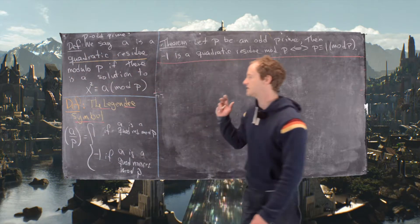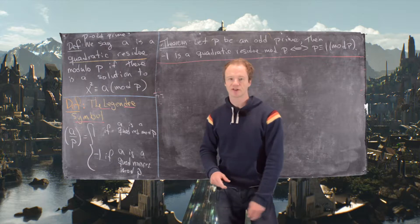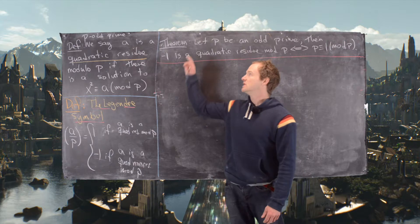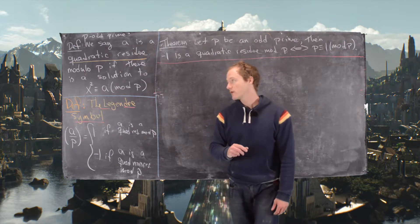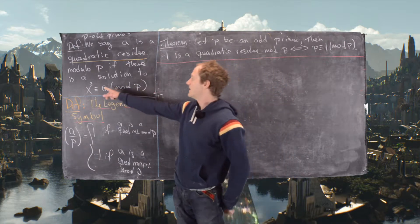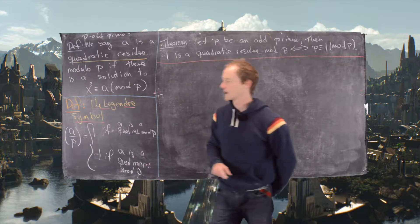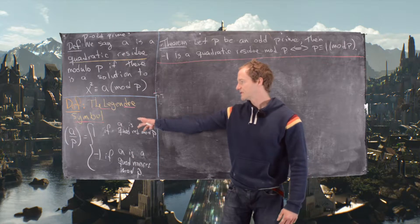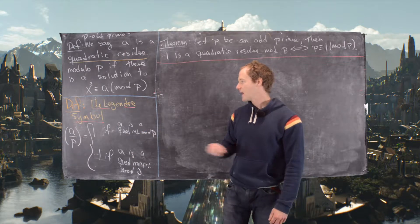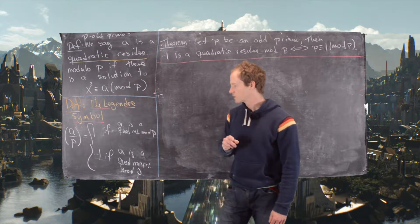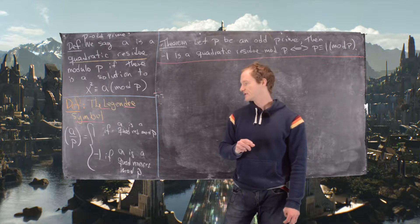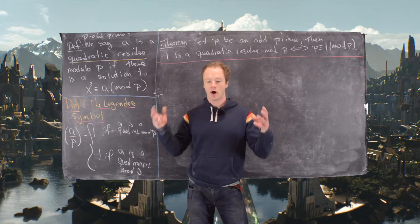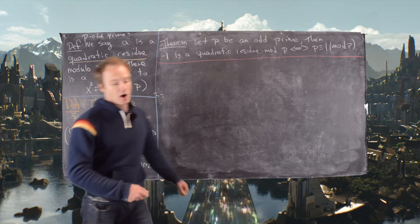So let's recall that a is a quadratic residue mod p if there's a solution to x squared congruent to a mod p. And the Legendre symbol is defined as follows: we have these parentheses, then we have a by p is 1 if a is a quadratic residue, and it's negative 1 if it's not a quadratic residue. So the Legendre symbol is like a question: are you a quadratic residue?